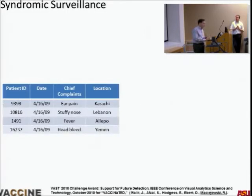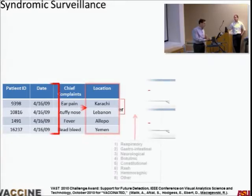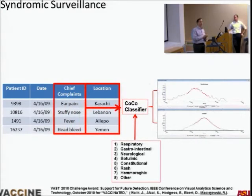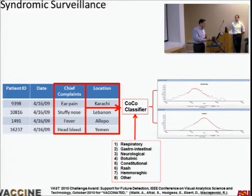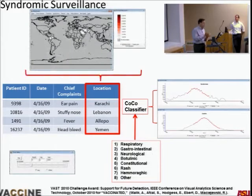Here's an example of syndromic surveillance of health complaints — taking keywords, applying a classifier based on human knowledge to categorize them into one of eight different categories, then providing actual graphs from that information. You can then map it and interactively explore what's going on.